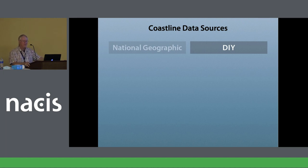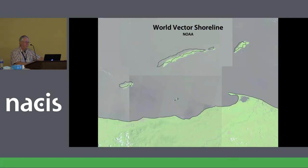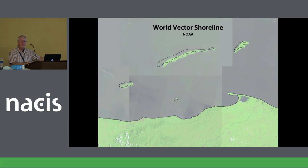So what's the alternative? Do it yourself — or at least myself, initially. The two public domain vector coastlines I'm investigating are World Vector Shoreline and Prototype Global Shoreline. Both have problems. Here's World Vector Shoreline, a NOAA product: it's pretty good in some places and really awful in others. This is the Caribbean coast of Honduras — the mainland coast is right on the money against a Sentinel satellite image mosaic, but then those offshore islands show something strange. This problem plagues World Vector Shoreline everywhere and requires extensive positional corrections.